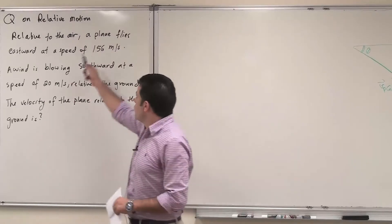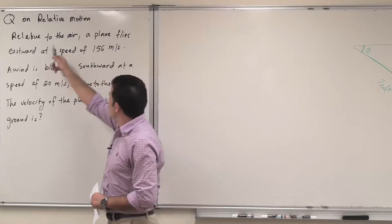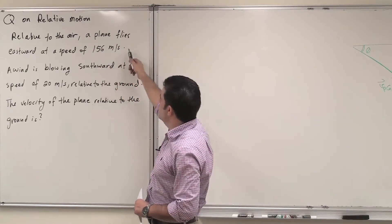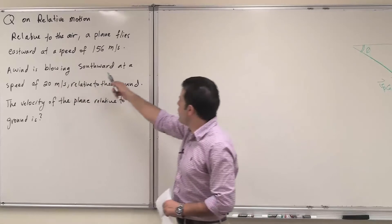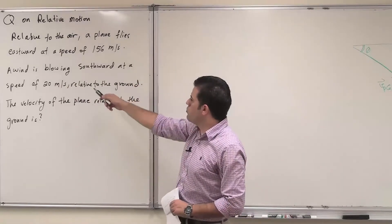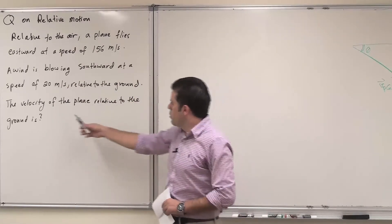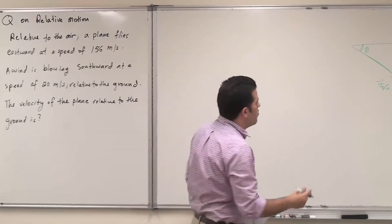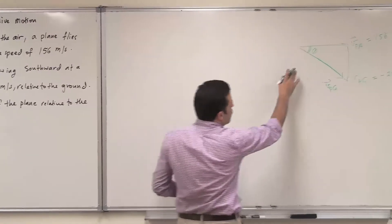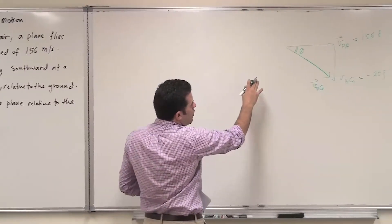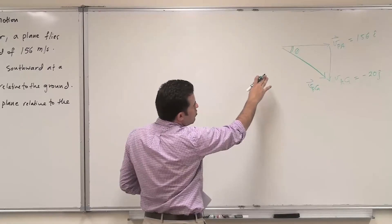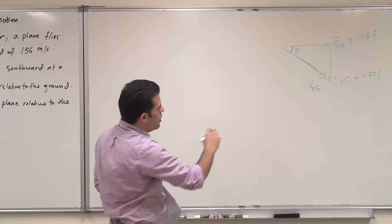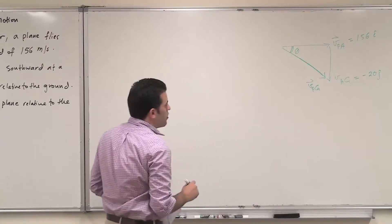The second question is also on relative motion. Relative to the air, a plane flies eastward at a speed of 156 meters per second, while a wind is blowing southward at 20 meters per second relative to the ground. Find the velocity of the plane relative to the ground. The static frame of reference is the ground, the moving frame is the air, and we want the velocity of the plane relative to the ground.